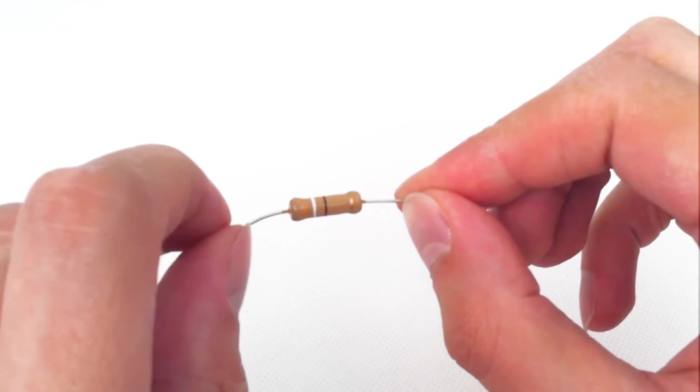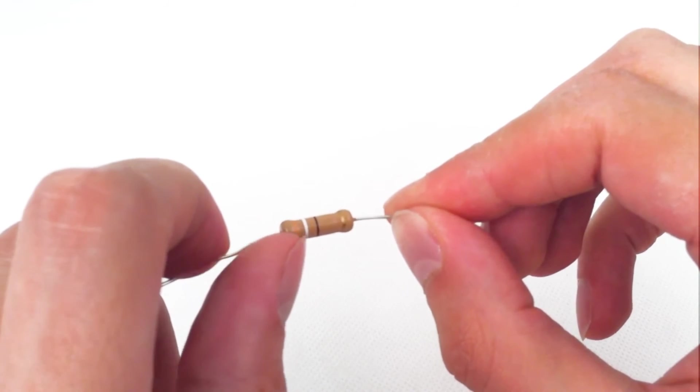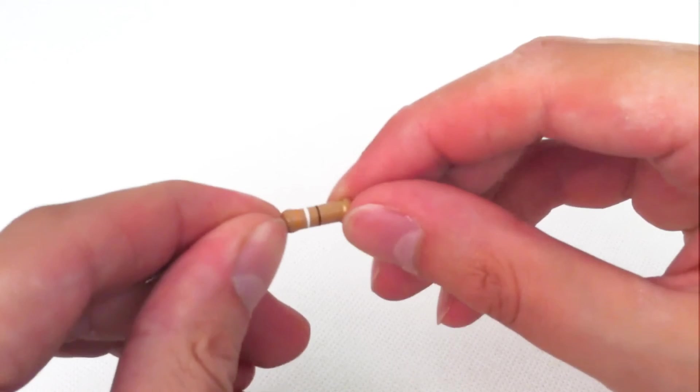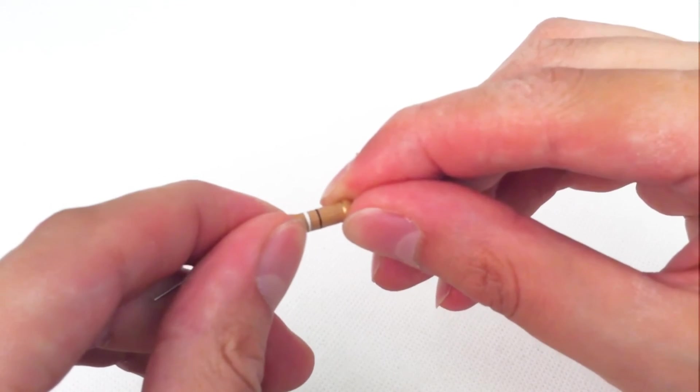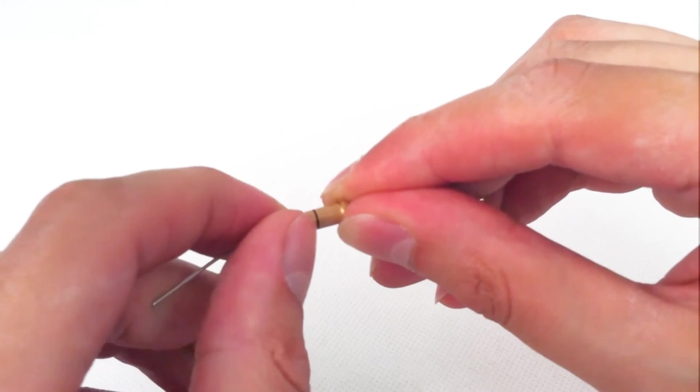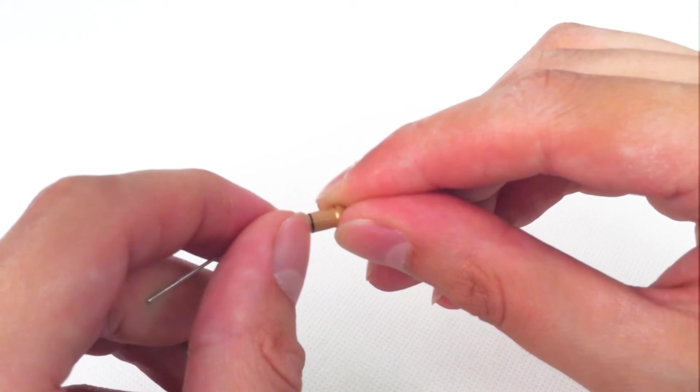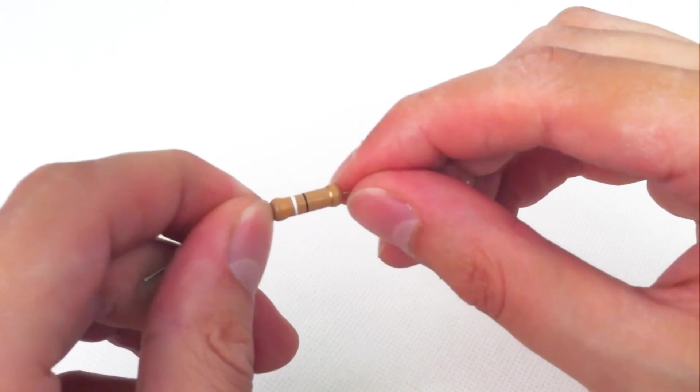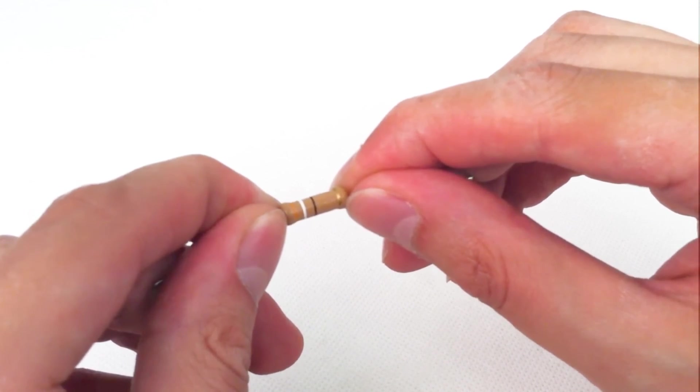And in this case, you can see the resistor is orange, white, black, which means the resistance value it gives is orange, 3, white, 9, black, times 1, which means no zeros. So here we have a 39 ohm resistor with a 5% tolerance value.